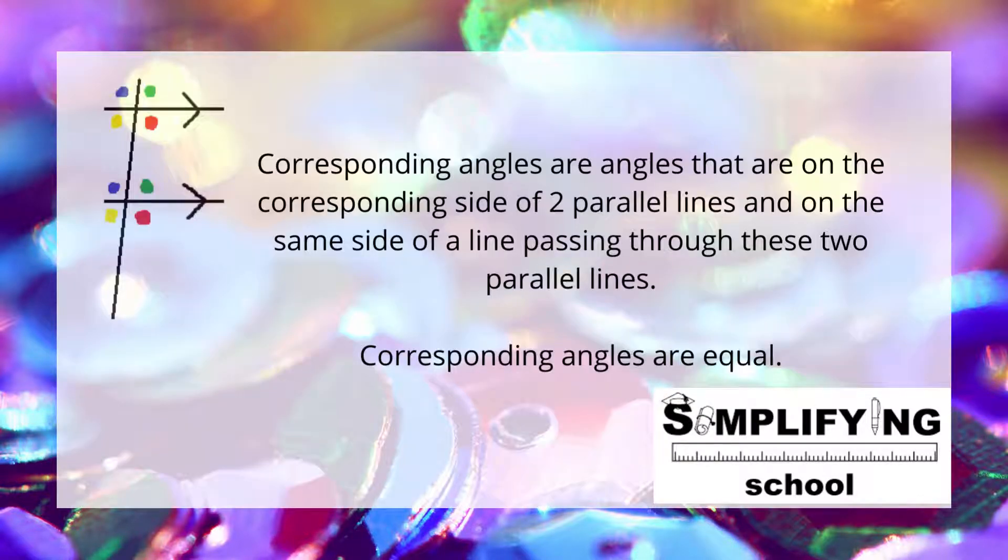First we draw an F. Here we have the two horizontal lines of the F that are parallel. Indicated on the drawing are corresponding angles. Corresponding angles are angles that are on the corresponding side of two parallel lines on the same side of a line passing through these two parallel lines. Corresponding angles are equal.